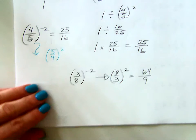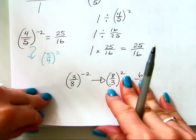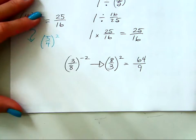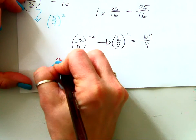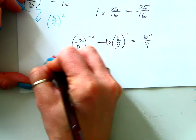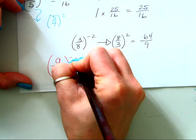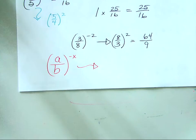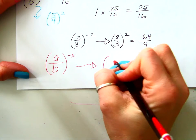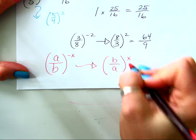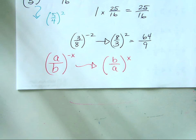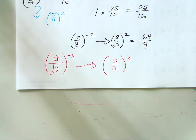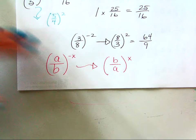So now let's move on. If you have a over b to the negative x power, you can really turn that into b over a to the positive x power. It's one of those things that's easy once you're taught it, but you'd have no idea it was valid unless somebody told you.